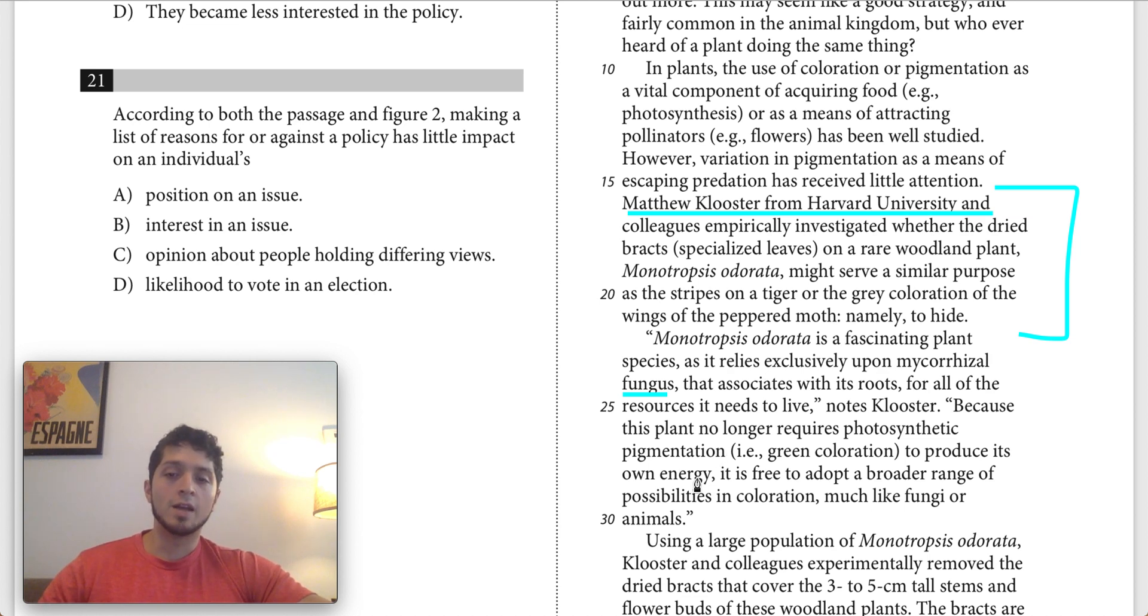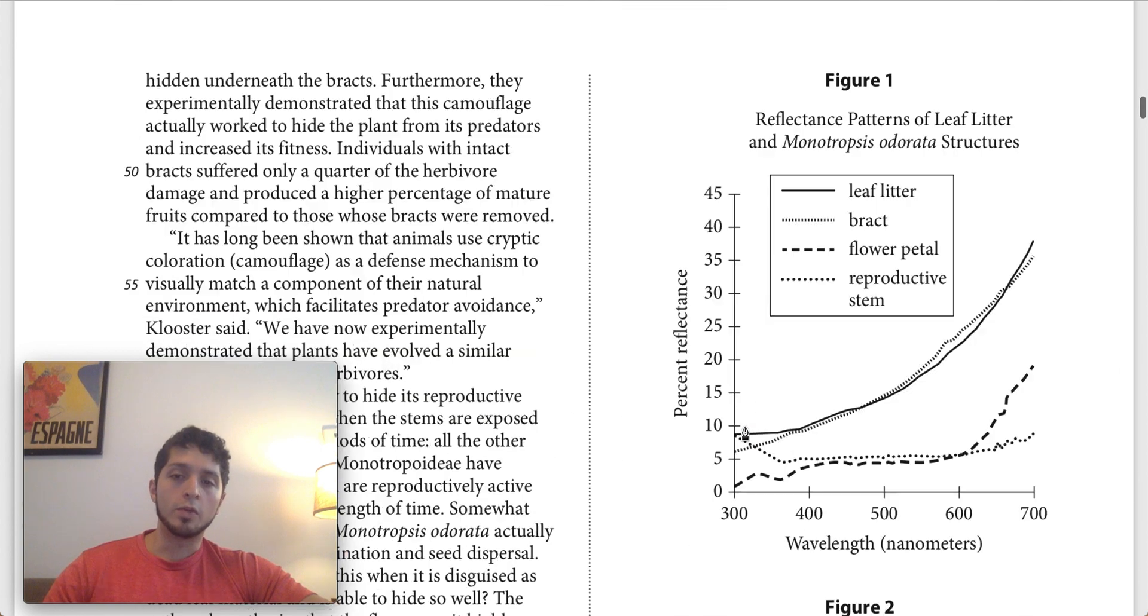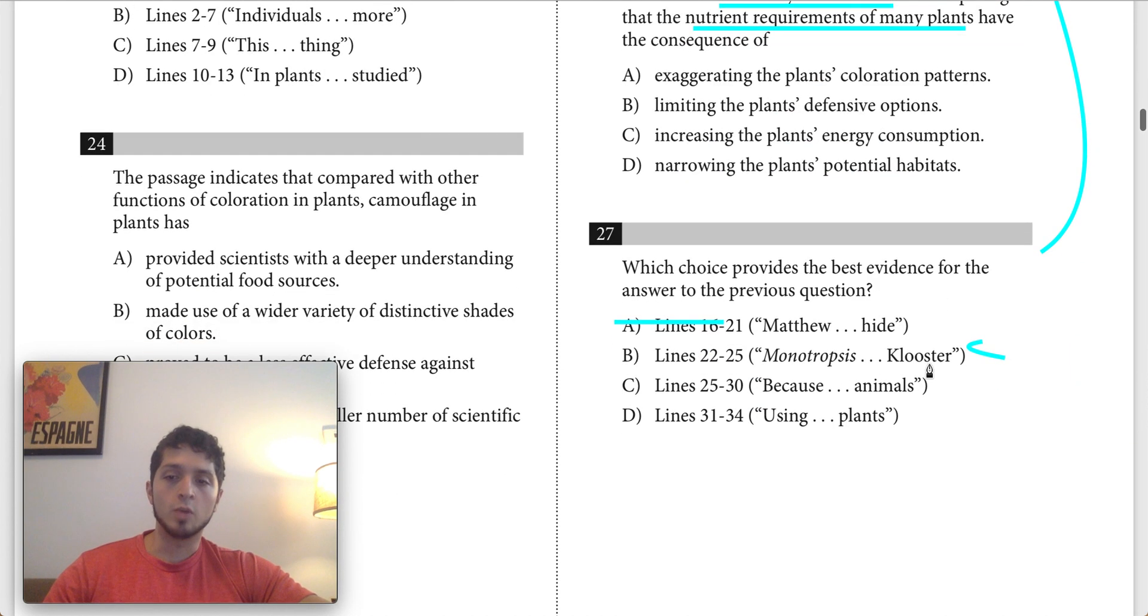Basically what that does is it allows it to adopt a broader range of possibilities in coloration. Because those plants that do need photosynthesis, they need a certain pigmentation, i.e. green coloration. So here we have a comparison between this specific plant and other plants, talking about the differences between how they get their nutrients and the effects of that. Both of these are pretty good. Let's keep C as well.